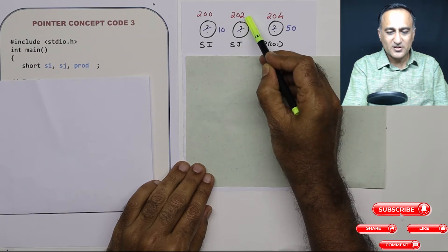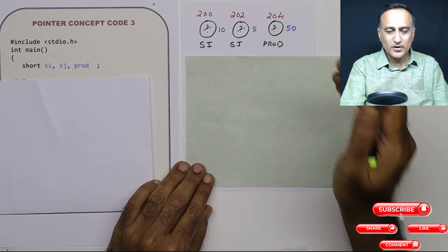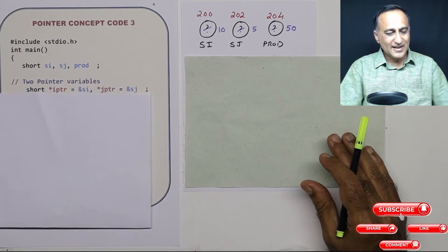Sj exists at address 202 and prod exists at address 204. Now let's see what is the next step.